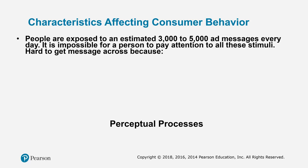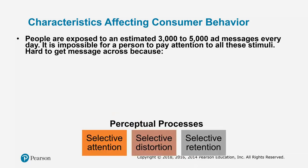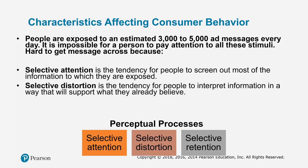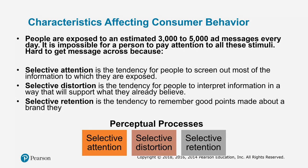People pay attention to stimuli, but it's hard to get your message across when there's selective attention — and many of us are probably selectively paying attention to this presentation while also looking at TV or listening to family. Selective attention is the tendency for people to screen out most of the information they're exposed to. Selective distortion is the tendency to interpret information in the way you want or believe. And selective retention is the tendency to remember good points made about a brand you like.